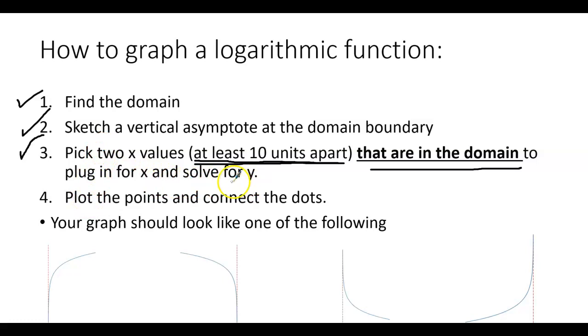That will give you two points that you can plot. And then after that you can just connect your dots. And our graph should look like one of the following. This is the standard shape here, but it can go backwards if there's a negative in front of the x, it can be upside down if there's a negative in front of the y, or it can be upside down and going left if there's a negative in front of both the x and the log itself.